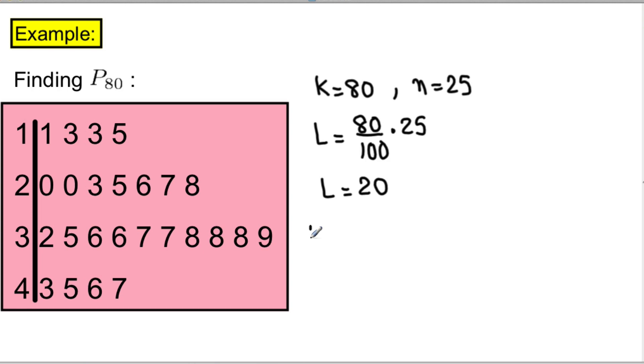So, since L is a whole number, then P_k will be, in this case, P80 will be the 20th element plus the 21st element divided by 2. So, we're taking the average of the 20th value and the next one, the 21st value. The 20th value is 38, and the 21st element is 39. Their sum divided by 2 is 38.5.